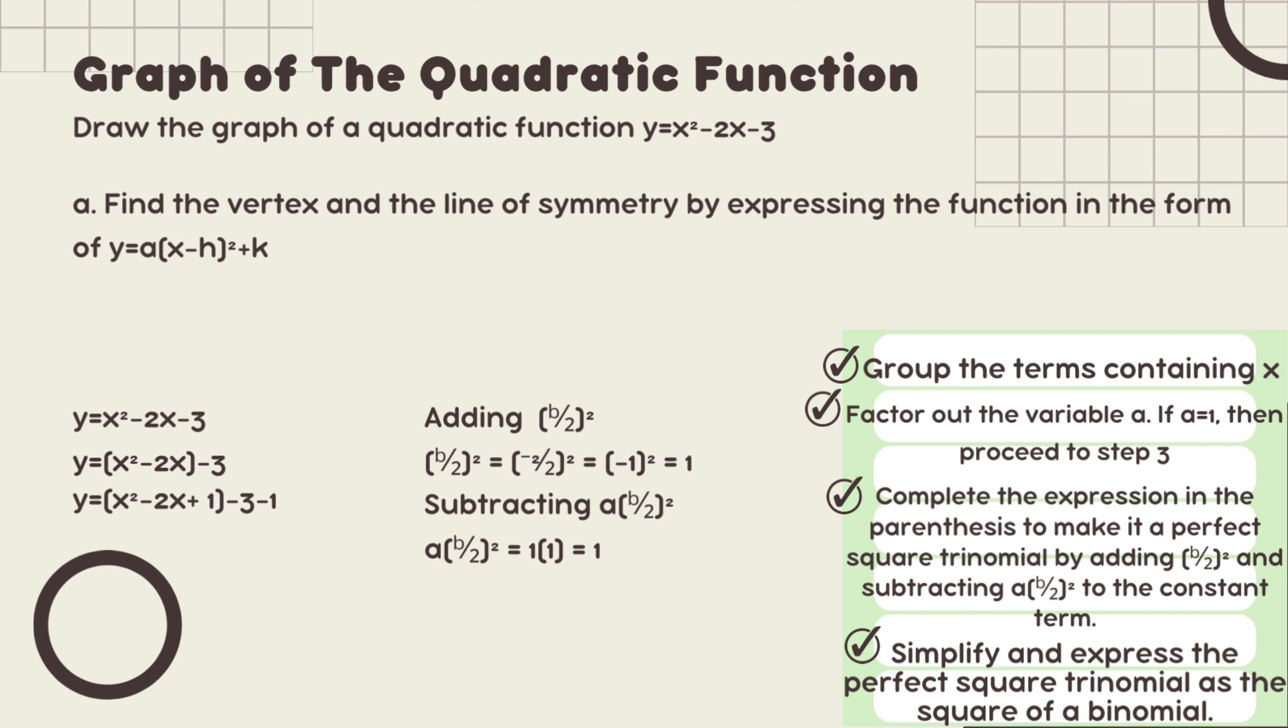Then the square of binomial is x minus 1 squared, since our b over 2 squared resulted in negative 1, and that's the square of binomial. So we just copied the x. The squared is removed from the parenthesis. The value we got from b over 2 squared, which resulted in negative 1 when we divided negative 2 over 2, that's the result. That's the square of binomial: negative 1 squared, then copy minus 4.